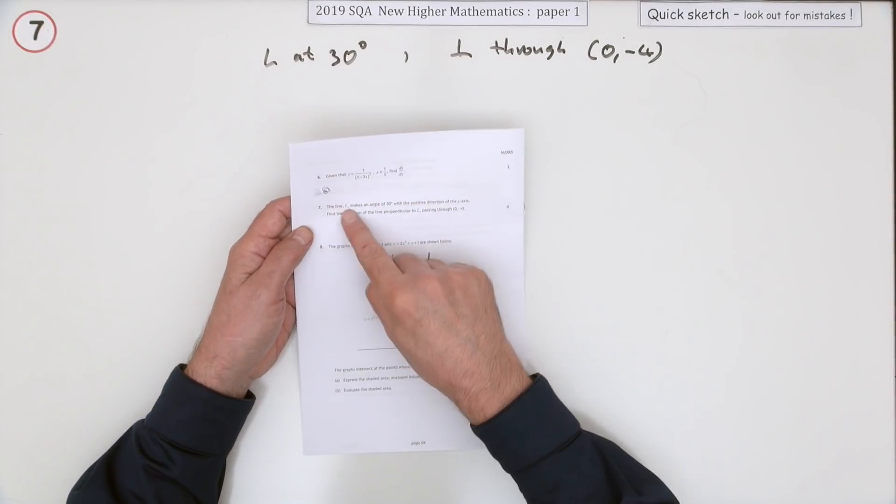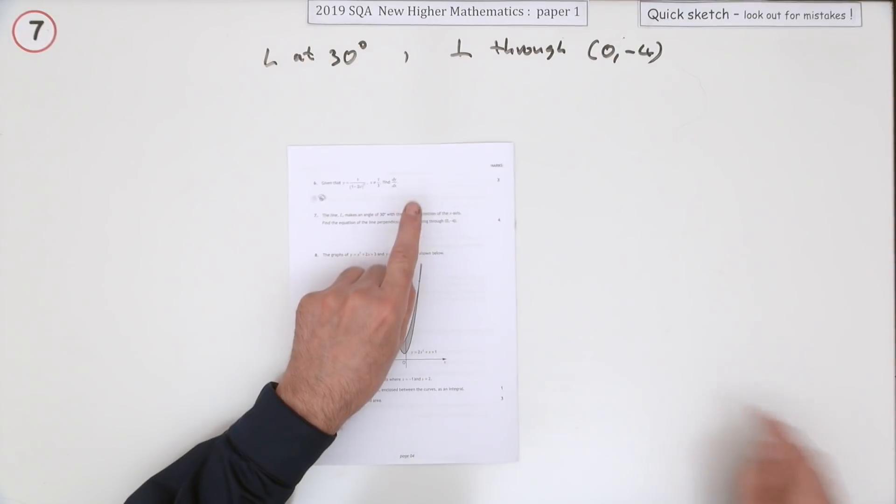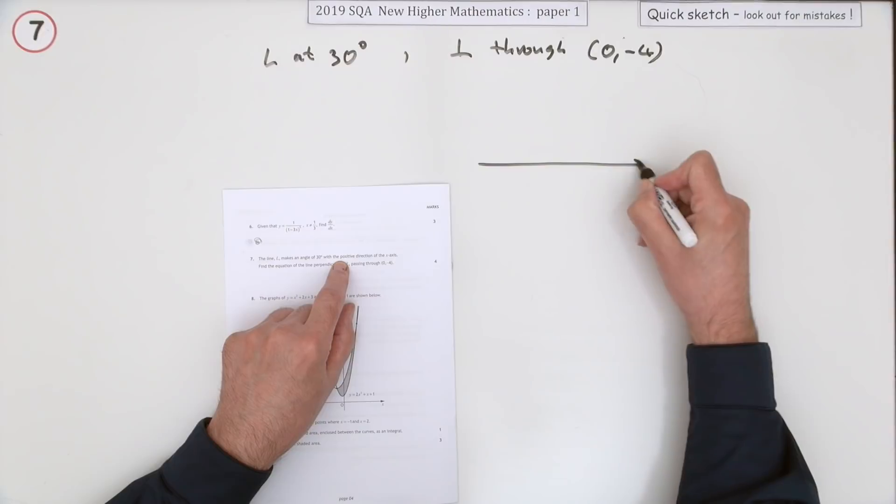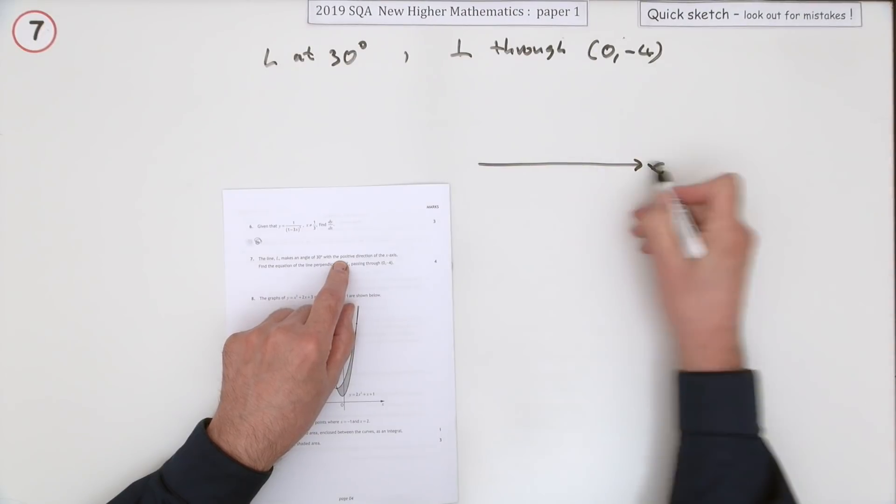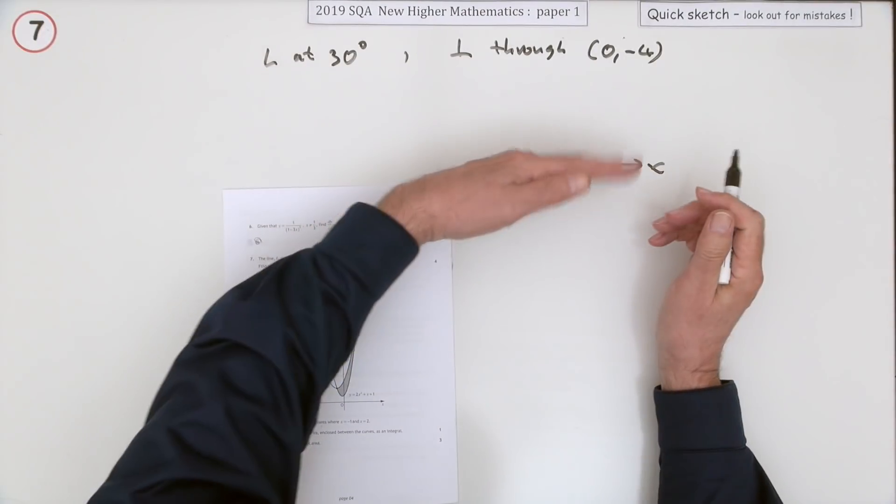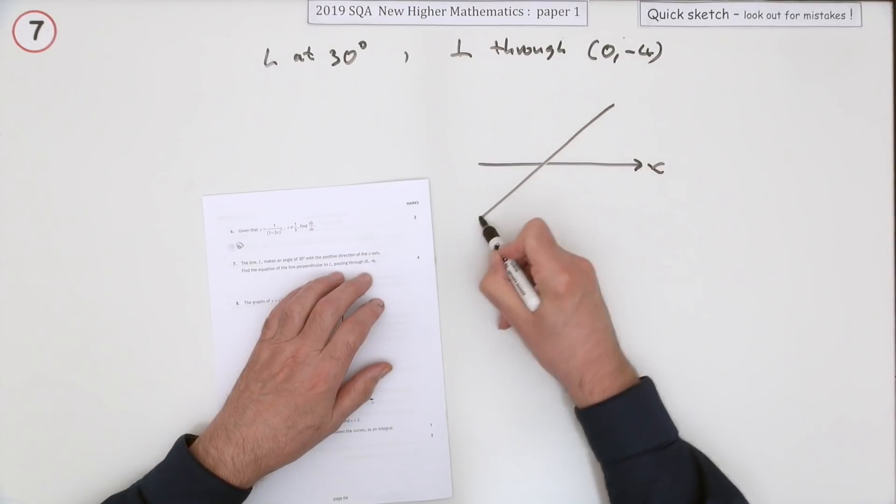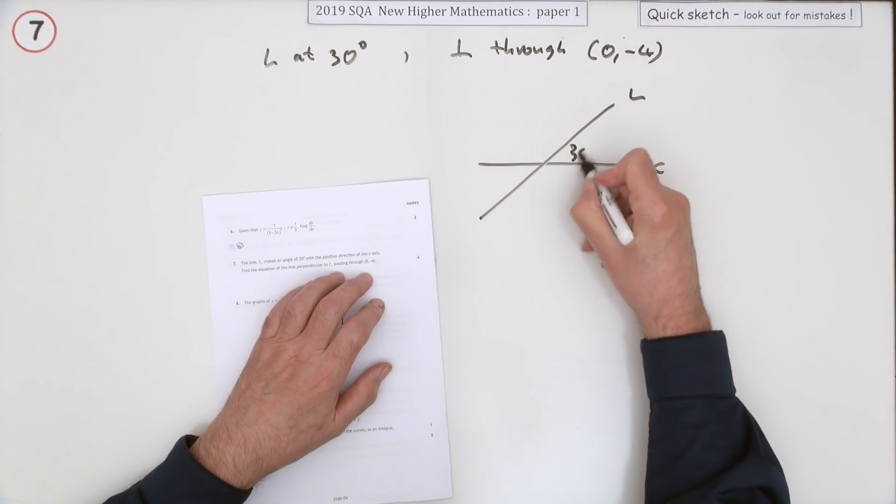What does it say? The line L makes an angle of 30 degrees with the positive direction of the x-axis. If you draw a sketch of it, there's the x-axis. This line makes an angle of 30 degrees with it, so this line comes through like that, where this angle is 30 degrees.